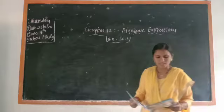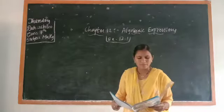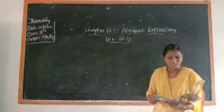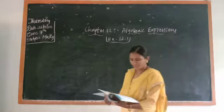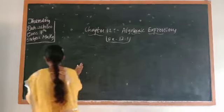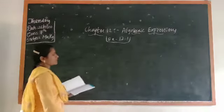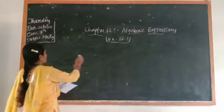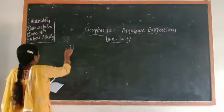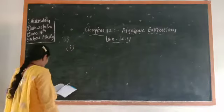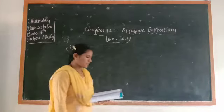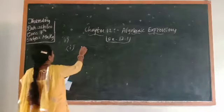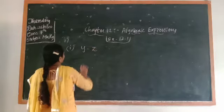Take the first question: subtraction of z from y. The expression is given in word form, and you have to write it as an algebraic expression. Subtraction of z from y means y minus z. 'From' means we take minus here.